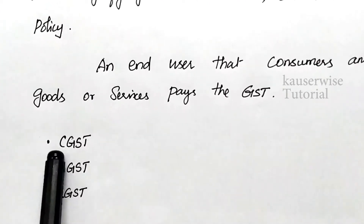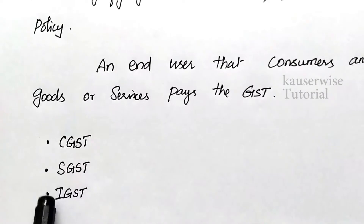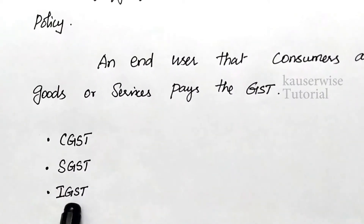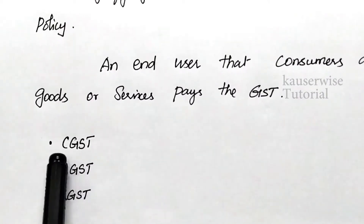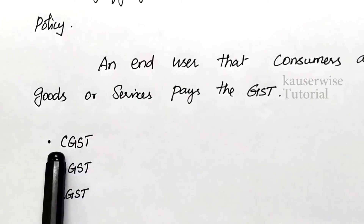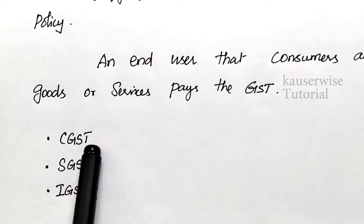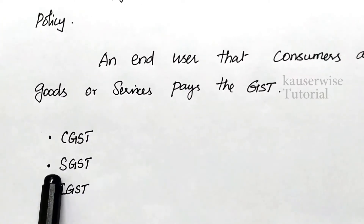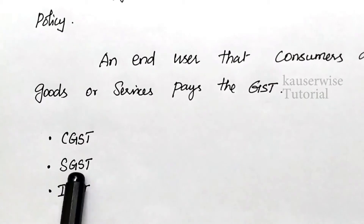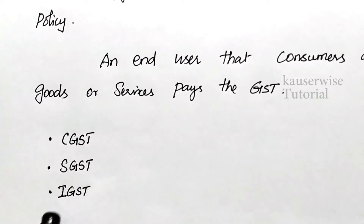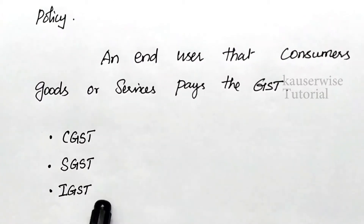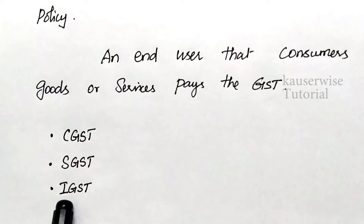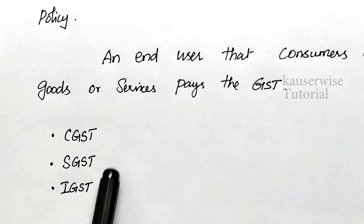GST has three different components: the first one is CGST, the second one is SGST, and the last one is IGST. CGST refers to Central Goods and Service Tax, SGST refers to State Goods and Service Tax, and IGST refers to Integrated Goods and Service Tax.